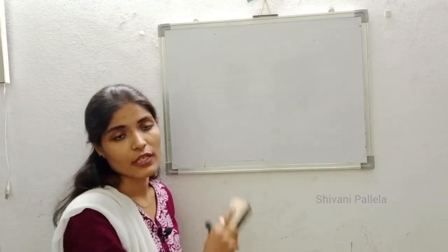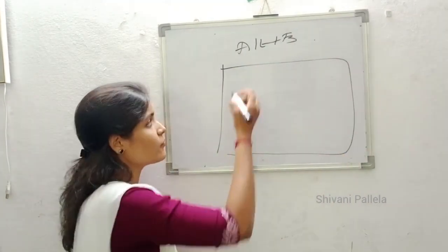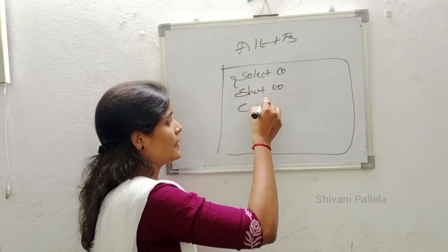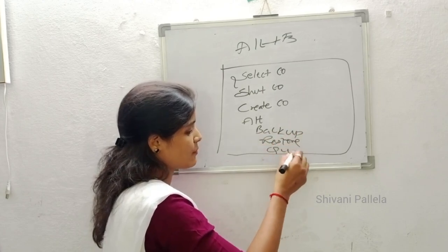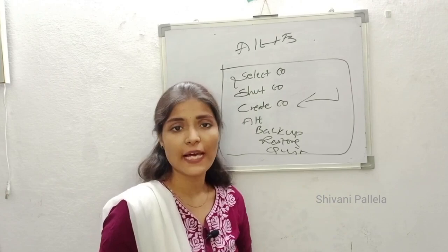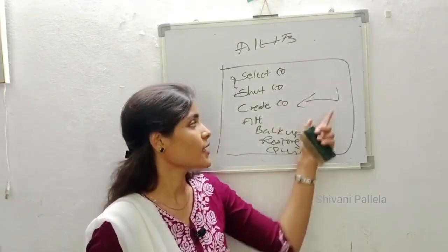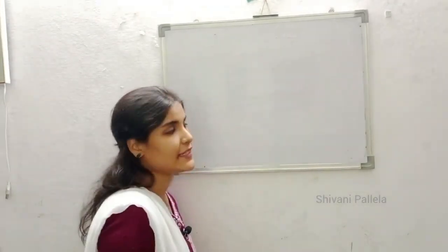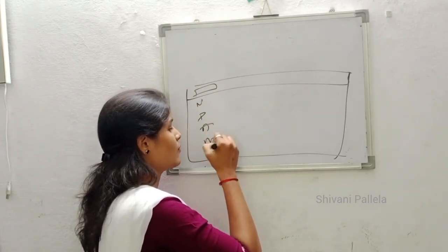This is the compulsory screen where you need to draw in every question from unit one and unit two. If we click Alt+F3, the screen displayed will have: Selected Company, Insight Company, Create Company, Alter, Backup, Restore, Display, and Quit. You select Alt+F3 to create a company in Tally. After getting into the main menu, click Alt+F3, find this screen, click on Create Company, and then another screen appears where you give company-related data like name, address, pin code, mobile number, state, and street.